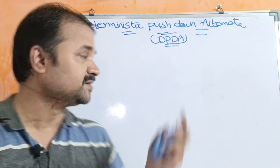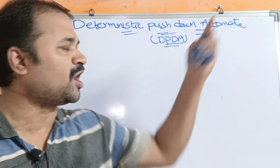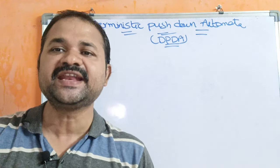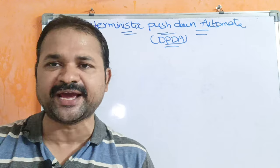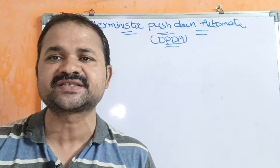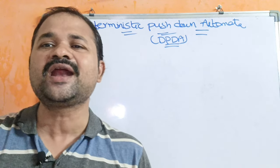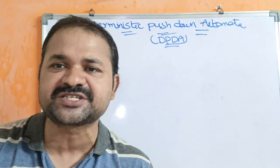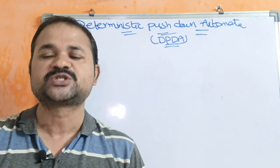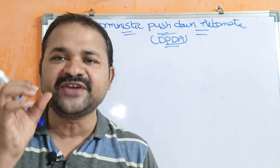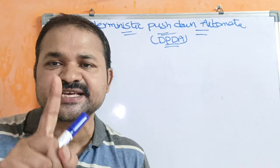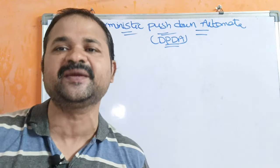Let us discuss about deterministic pushdown automata, in short DPDA. We can classify PDA into two types: first, deterministic pushdown automata, and second, non-deterministic pushdown automata. Already we have seen non-deterministic pushdown automata. DPDA means if we apply an input symbol on the current state and it produces only one next state, then it is called DPDA.